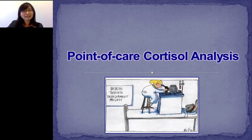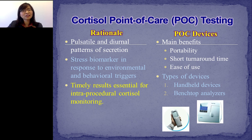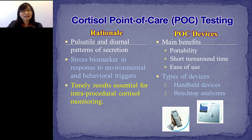In the second part of the presentation, we will discuss cortisol analysis at point-of-care. Point-of-care (POC) devices are portable, easy-to-use devices that can provide rapid results outside traditional clinical settings. There are two major types: handheld devices with miniature detection systems and disposable cartridges, and bench-top analyzers smaller and less complex than central laboratory instruments. Why do we need point-of-care cortisol testing? Cortisol spikes 15 minutes after the onset of a stressor and is therefore used as a biomarker of stress adaptation in response to environmental and behavioral triggers controlled by the HPA axis.